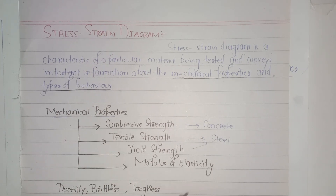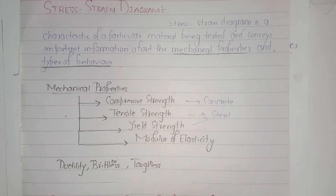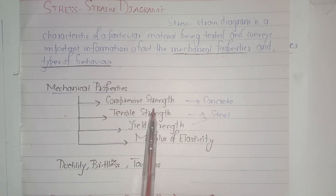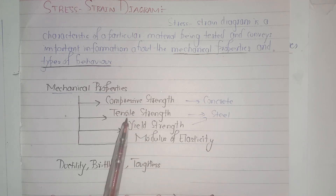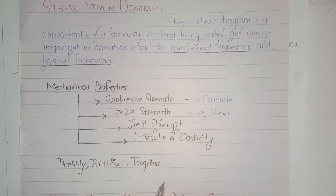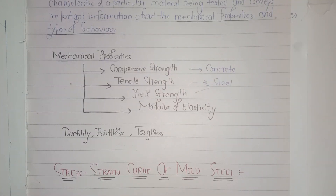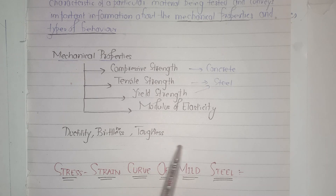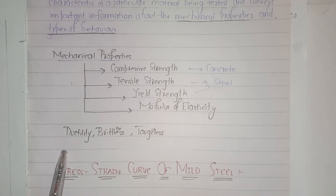What are the mechanical properties that we obtain from a stress-strain diagram? If it is concrete, we can obtain compressive strength. If it is steel, we can obtain tensile strength, yield strength, and modulus of elasticity. You can also get an idea of how the material is behaving — whether it is ductile, brittle, or tough — just by looking at the stress-strain diagram.